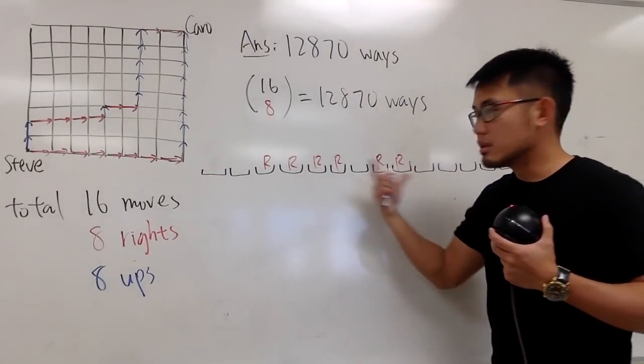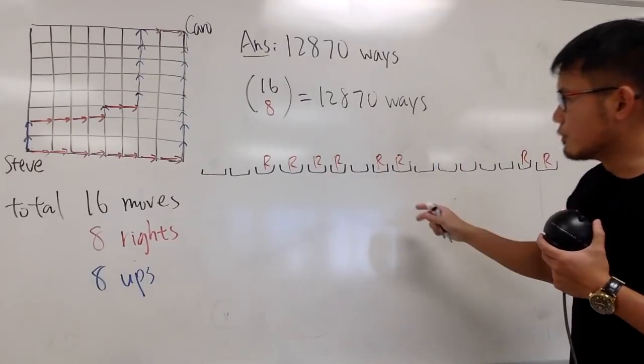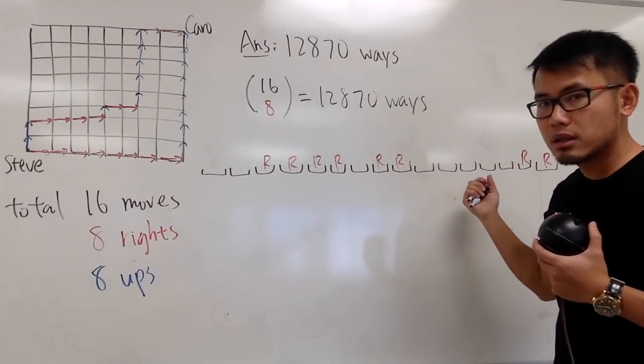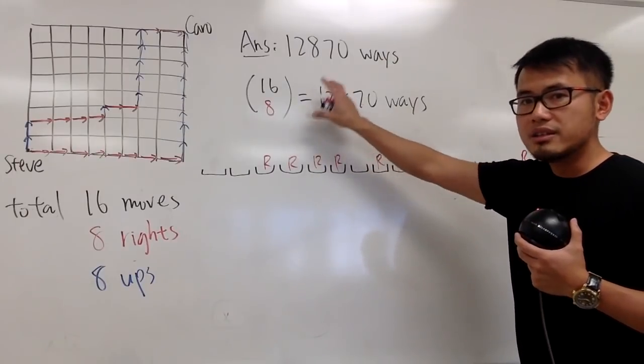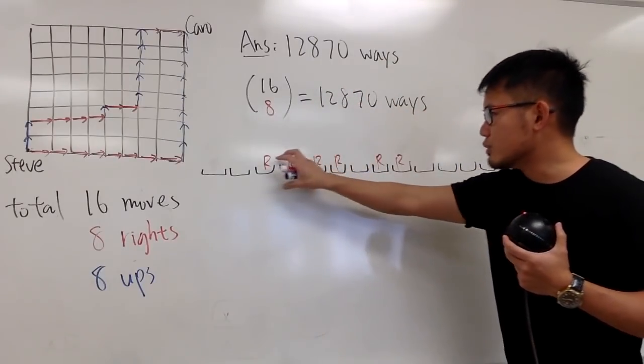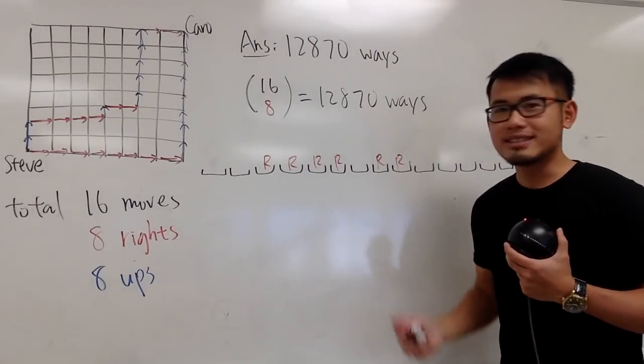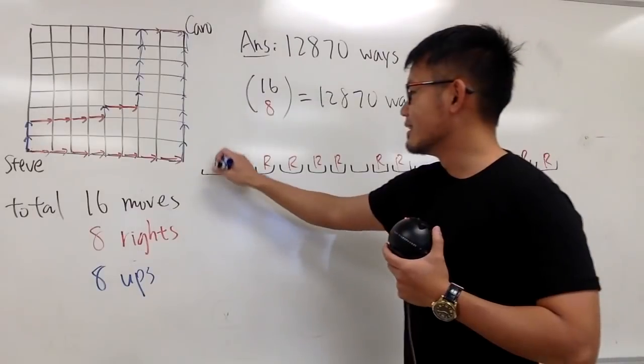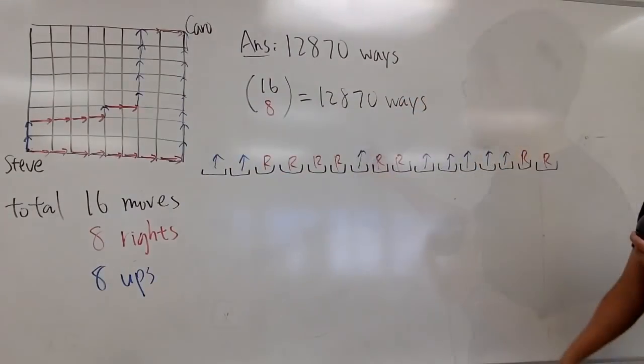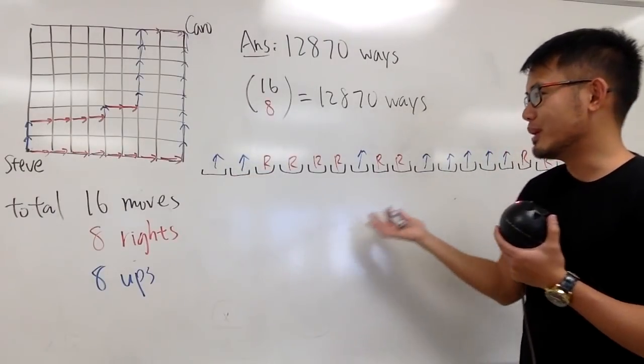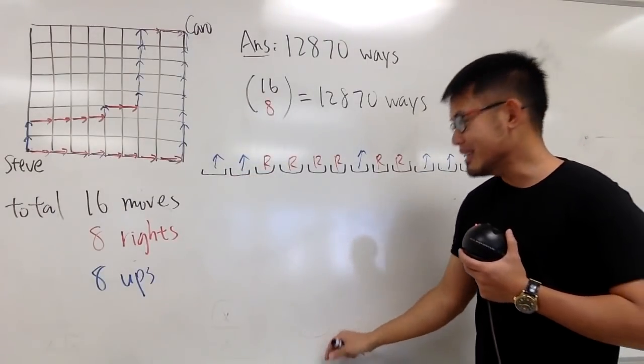So, this is just eight moves among the 16 moves, and we assign it to be right. And, in fact, as you see, this is enough, because once you choose these eight spots to be moving to the right, the rest have to be what? Ups, of course. So, the rest have to be up. So, the moment you figure this out, the rest have to be up, so you don't have to do anything else. And this right here is it.